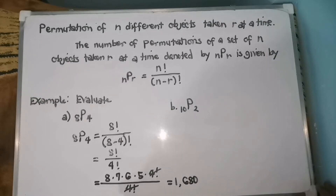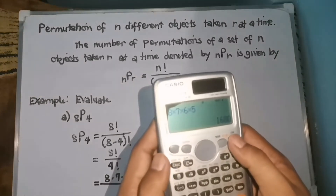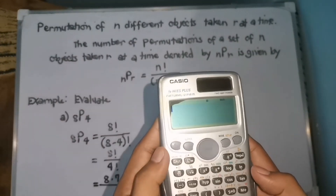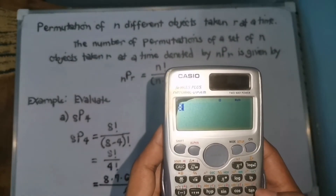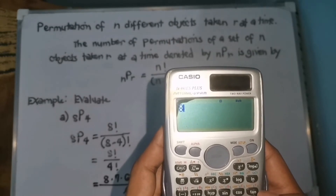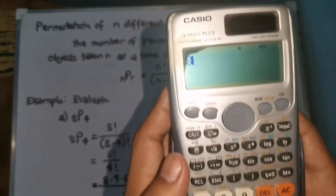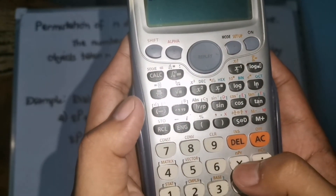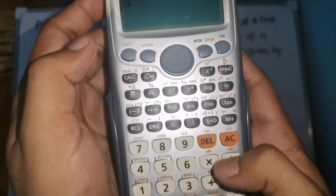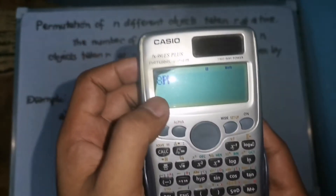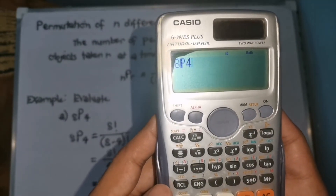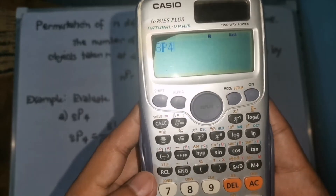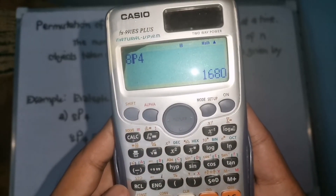We can also verify this using a scientific calculator. Just press 8, then use the Shift key to access the NPR function, then enter 4, and press equals. We get the same answer of 1,680.